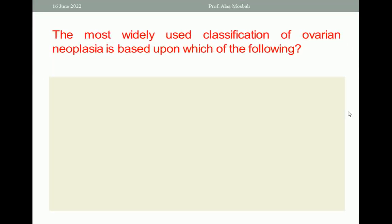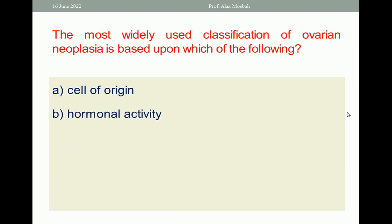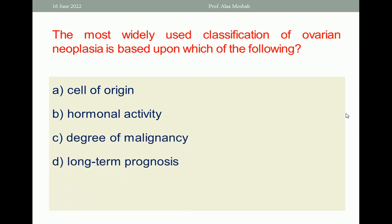The most widely used classification of ovarian neoplasia is based upon which of the following? A. Cell of origin; B. Hormonal activity; C. Degree of malignancy; D. Long-term prognosis; E. Severity of symptoms. The one best response here is A — cell of origin.